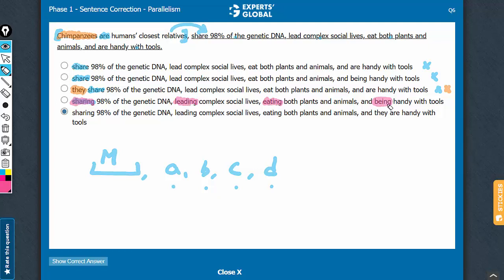The four verbs sharing, leading, eating, being are parallel, and these four are not parallel to the verb in the main clause, are. An excellent answer choice. This is likely to be the correct answer choice here. Let's still look at answer choice e.